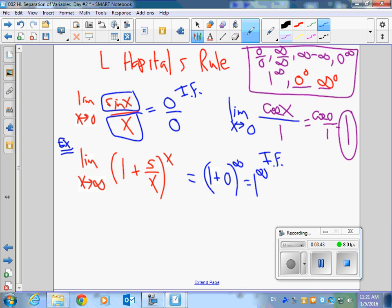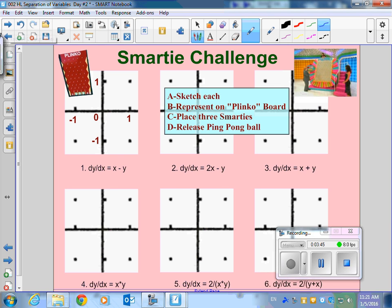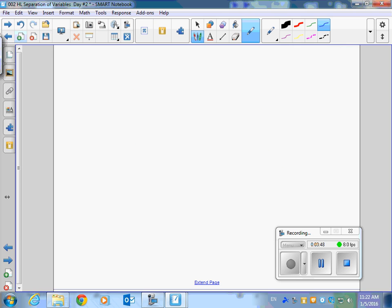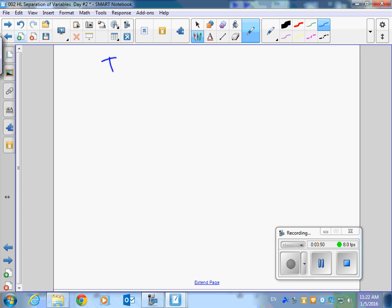Another thing we talked about was the improper integral. And improper integral is a technique of integration where you can go from 1 to infinity of 1 over x squared dx. And you can actually find what that is.